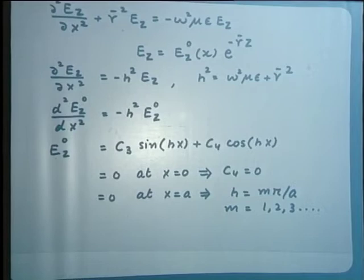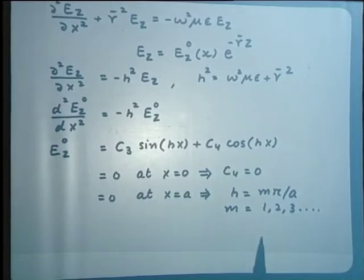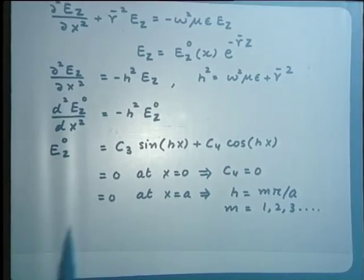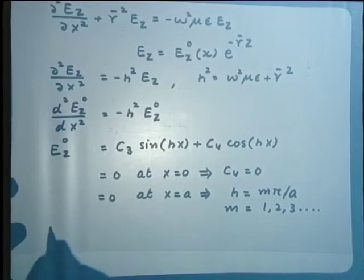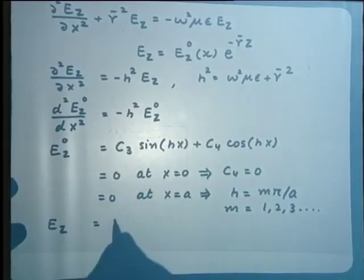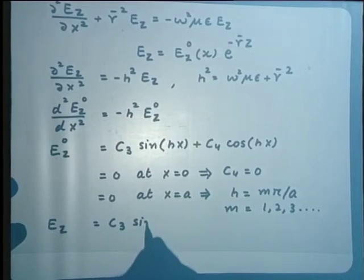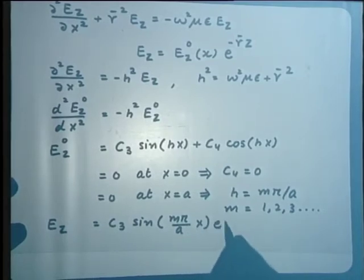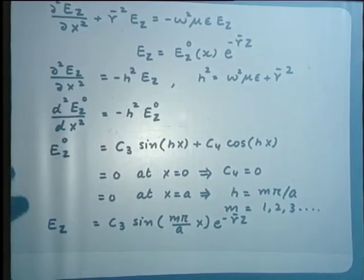While in the case of TE waves m=0 would lead to a trivial situation with all field components becoming zero, in the TM case it does not happen — this we shall discuss in detail later. For now, we restrict m to 1, 2, 3, etc. The complete expression for Ez becomes: Ez = C3·sin(mπ/A · x)·e^(−γ̄z).